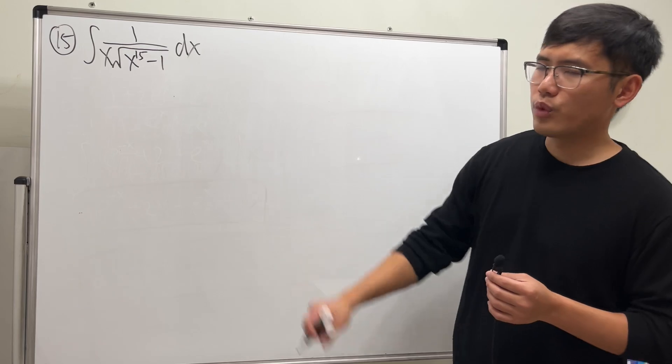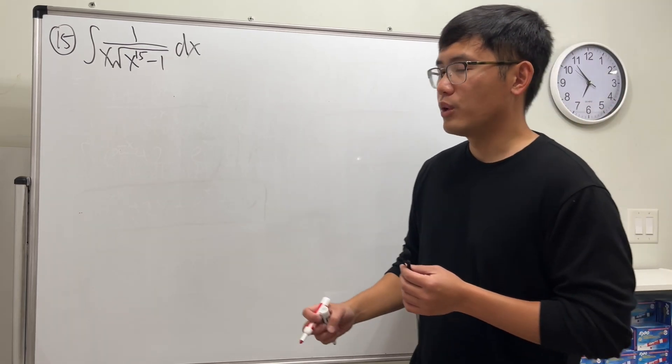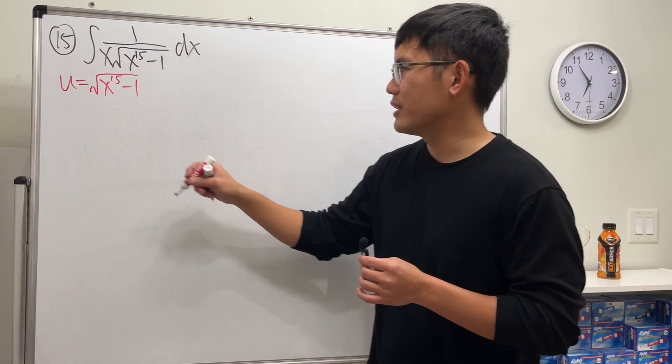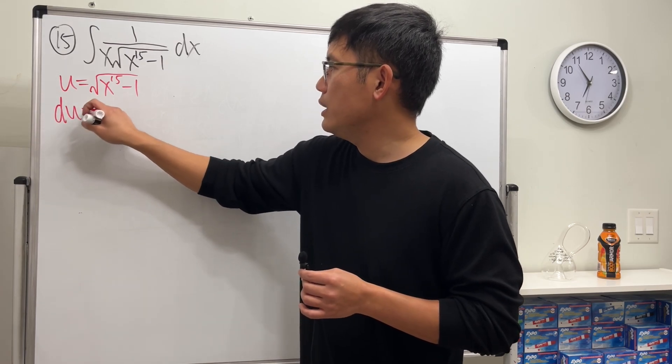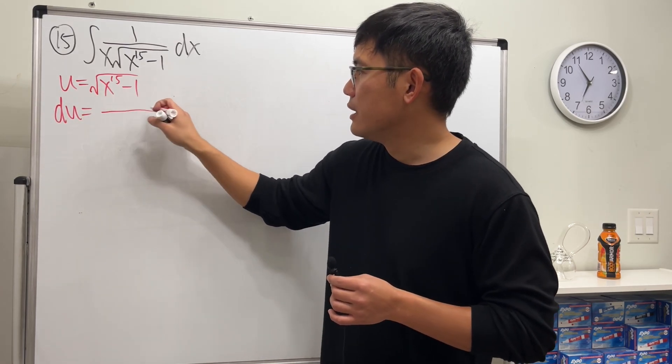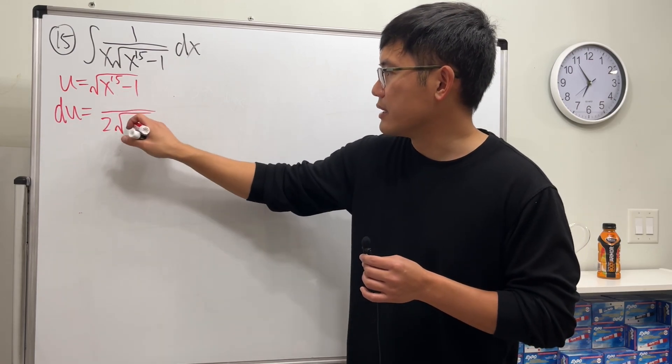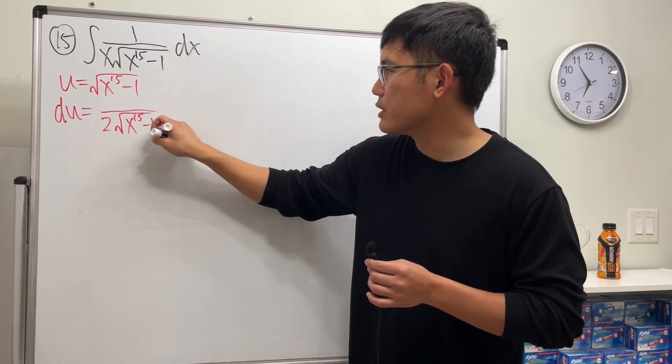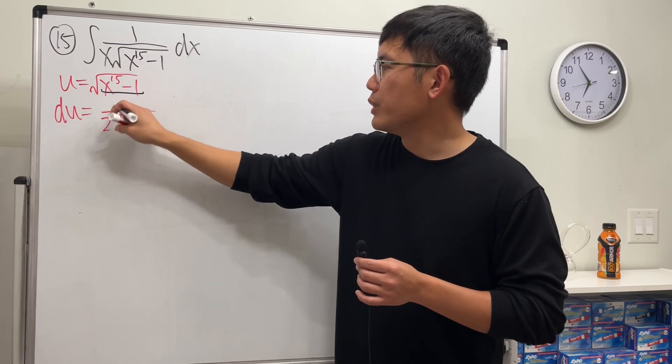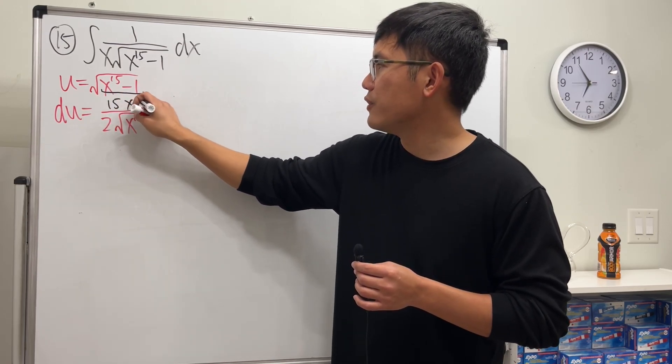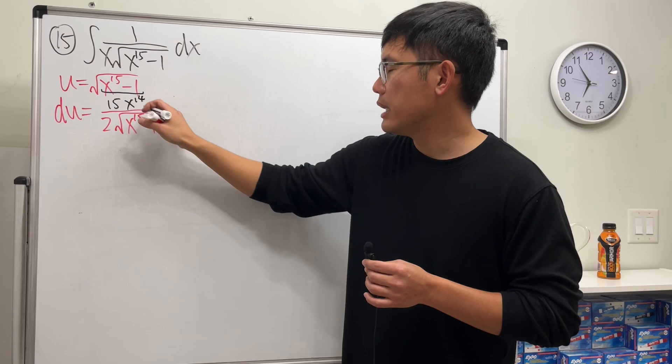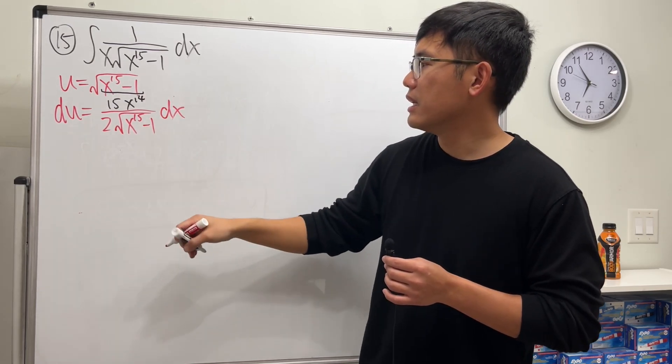So let's try. Differentiate now, so du equals the derivative, that is something over 2 times the square root of the inside, x to the 15 minus 1. And use the chain rule, so we get 15x to the 14th, and then we have the dx.